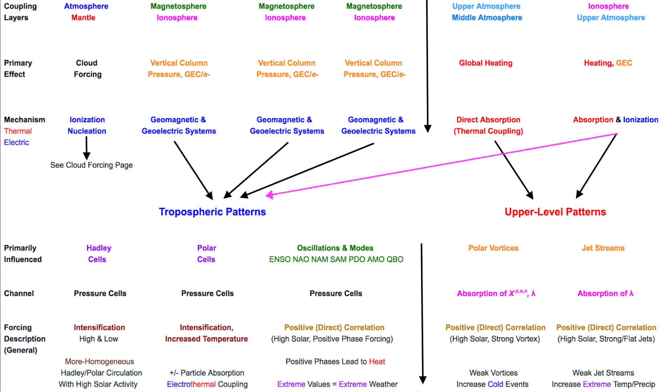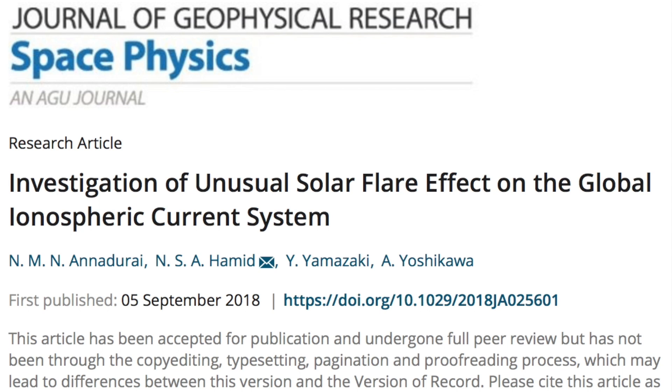Also note on the right the magenta line coming from the ionization of solar flares over to the left. That's the solar flare X-ray effect on tropospheric patterns, which is indeed one of the known and significant pathways of the interplay. We just saw that paper this week about solar flares and the electrojets.